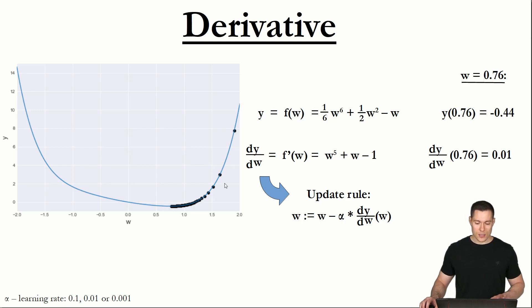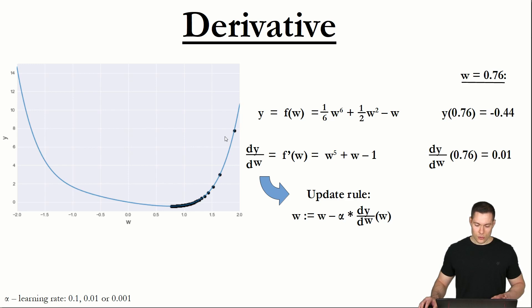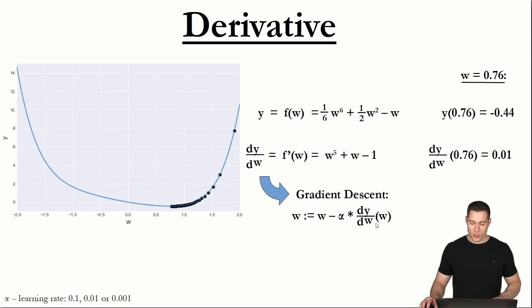This way of finding the minimum — randomly picking a value and then using the derivative to step by step get closer to the minimum — is called gradient descent. Because we are using the gradient, which is just another word for slope, to descend the function towards the minimum.